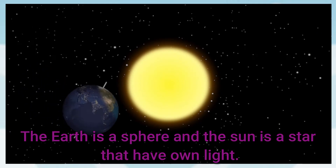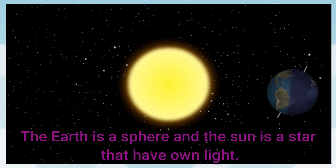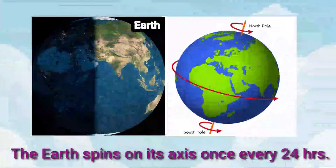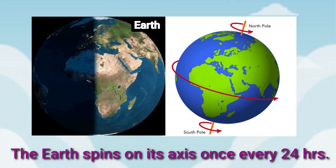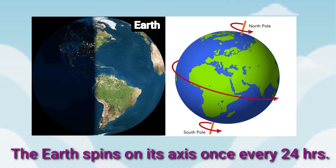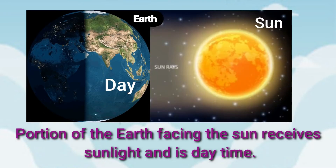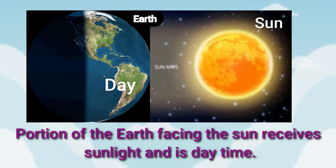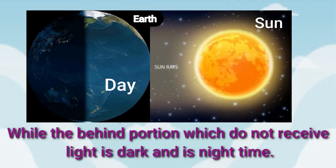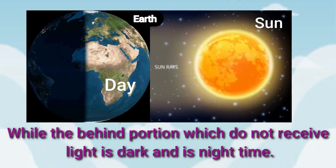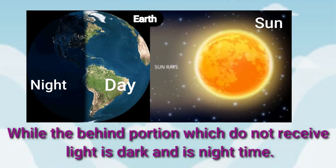The earth is a sphere shape and the sun is a star that has its own light. Earth spins on its axis once every 24 hours. The sun radiates light and the portion of the earth facing the sun receives sunlight and is daytime there, whereas the portion behind which does not receive light is dark and is nighttime there.